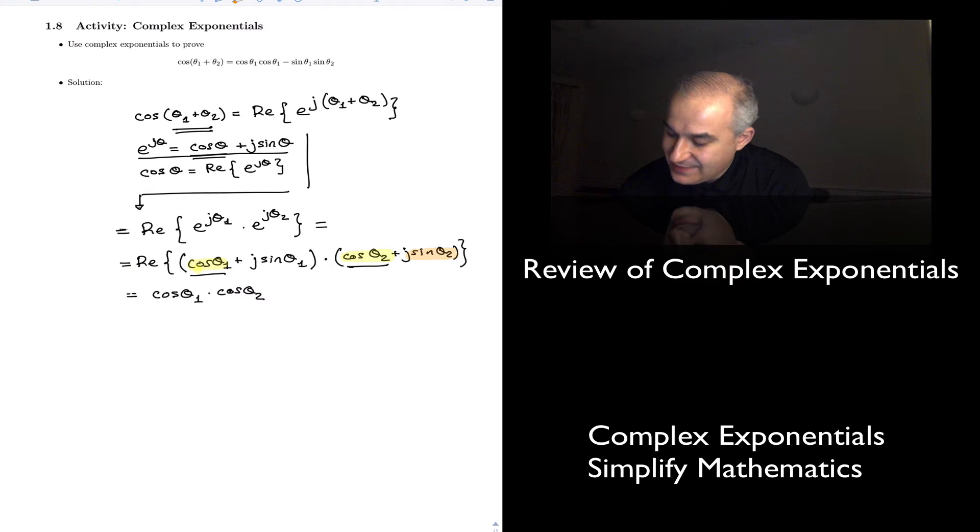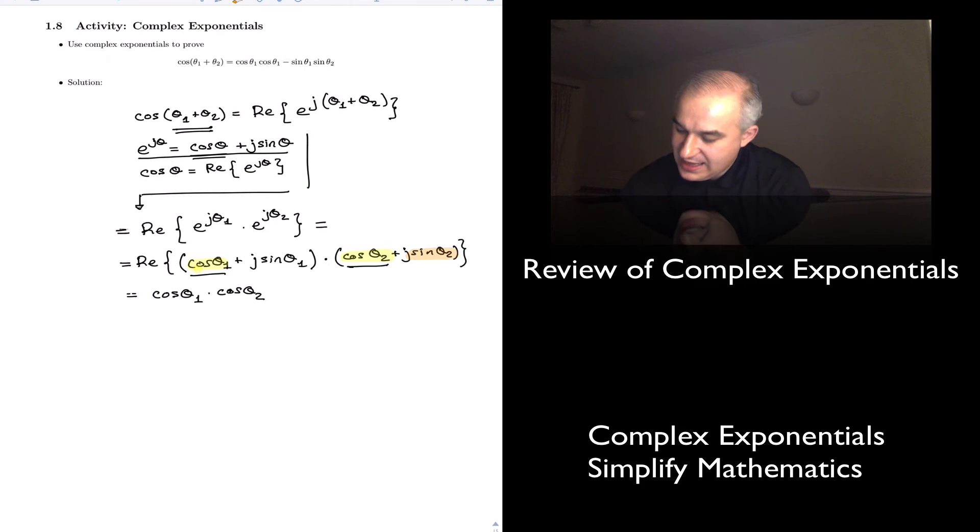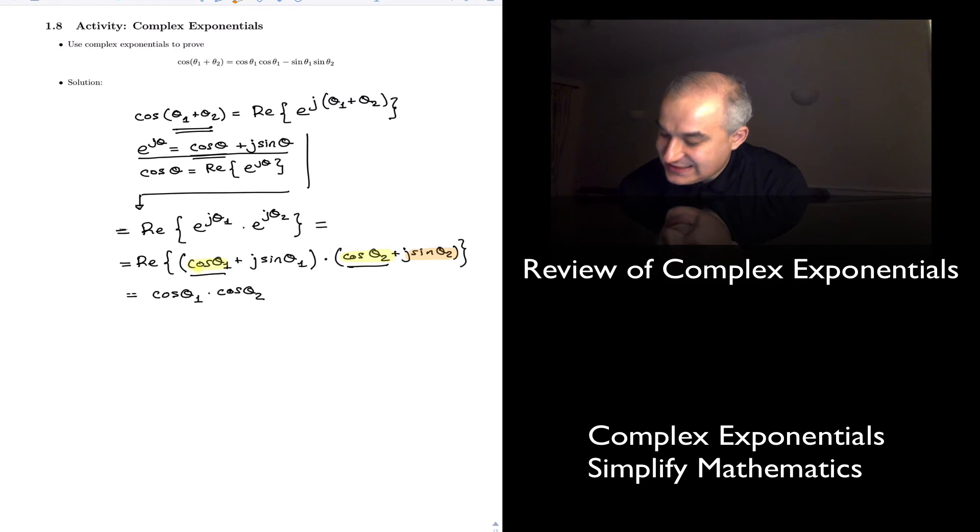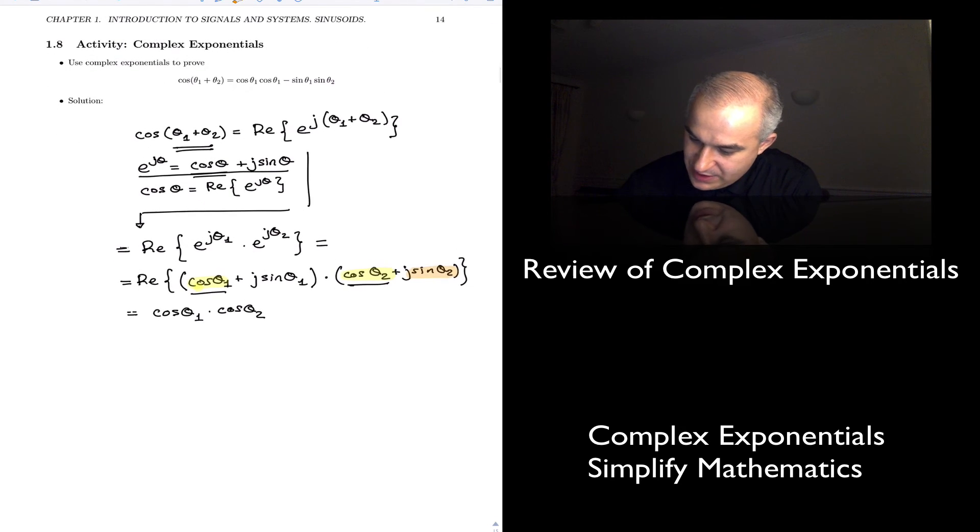j sine of theta 1 times cosine of theta 2. Real or imaginary? Imaginary. The real operator does not allow us to extract it. It's imaginary. j sine of theta 1 times j sine of theta 2. Real or imaginary? Well, j, imaginary number, times j, gives us minus 1. And so it is real. Right? And so we have minus sine theta 1 times sine theta 2. Because j times j is equal to minus 1. And that's what I have there. So we are done.